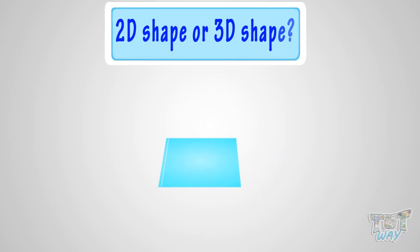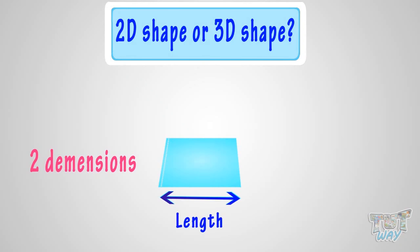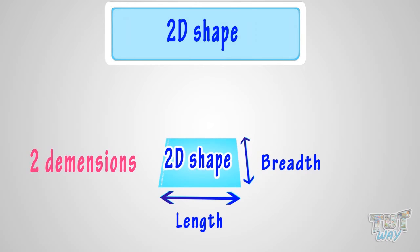Here we have another shape. Is it a 2D shape or a 3D shape? This shape has only 2 dimensions — length and breadth. No height. So it's a 2D shape.